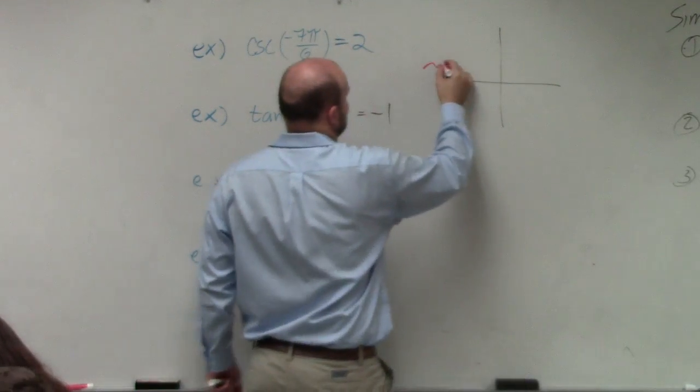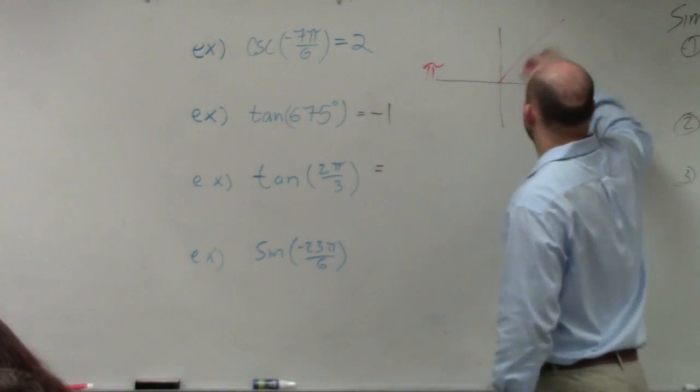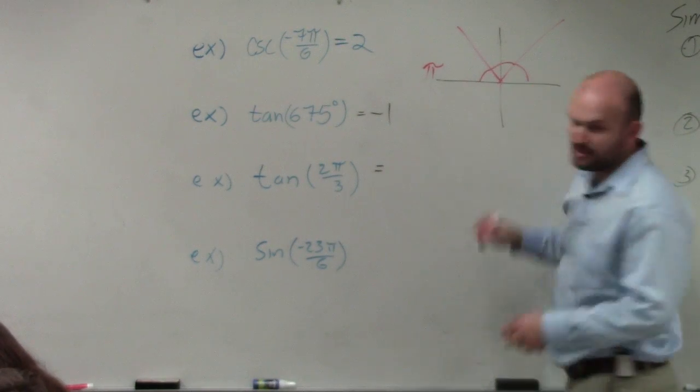I know that halfway around the circle is π. So 1π over 3, 2π over 3, 3π over 3, right?